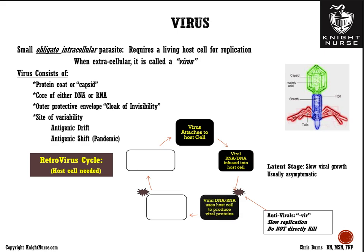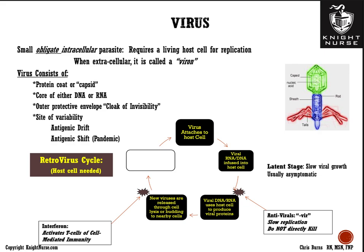The viral DNA or RNA uses the host cell's manufacturing process to produce more viral proteins and viruses. If an infected cell displays a foreign surface antigen, T cells may recognize it and kill the cell through apoptosis. If that doesn't happen, new viruses are released either by the cell bursting or through a budding process, entering the bloodstream to search for new uninfected cells to infect — completing the viral cycle.